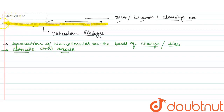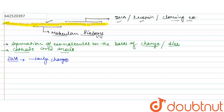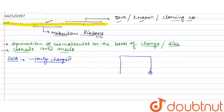We use this technique for the separation of protein, DNA, etc. For example, if we need to separate DNA, we know that DNA is a negatively charged molecule. Because it is negatively charged, it moves towards the positive charge, or we can say towards the anode. This is our electrophoresis unit and this is the agarose gel used in this technique.